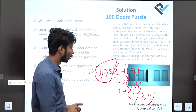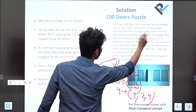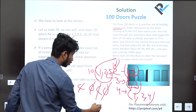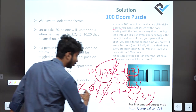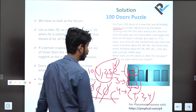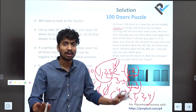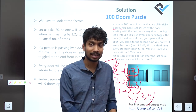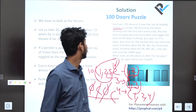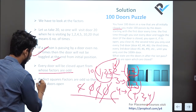Now, what is happening? All doors start closed. When we visit a door an odd number of times, it ends up open; when we visit an even number of times, it returns to closed. Doors with an even number of factors will be closed, and doors with an odd number of factors will be open. Only perfect squares have an odd number of factors.